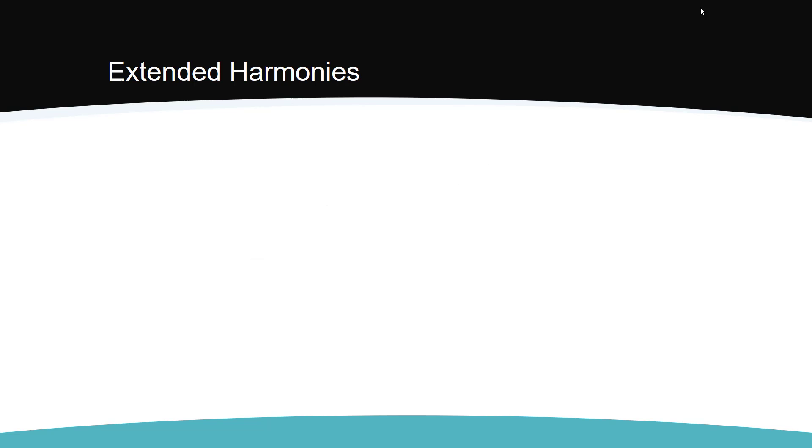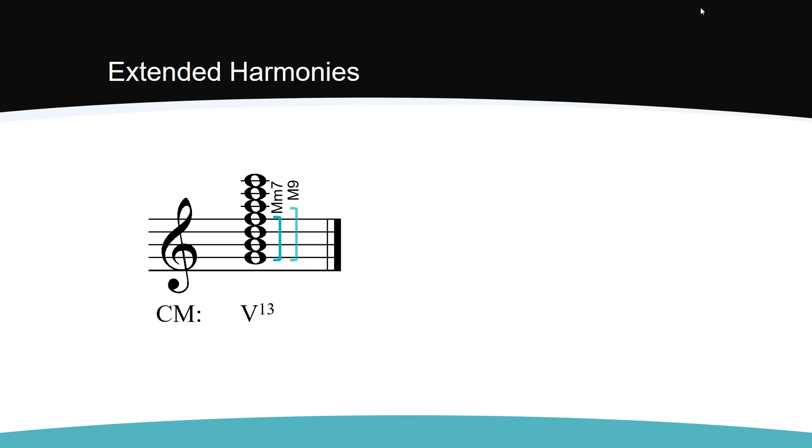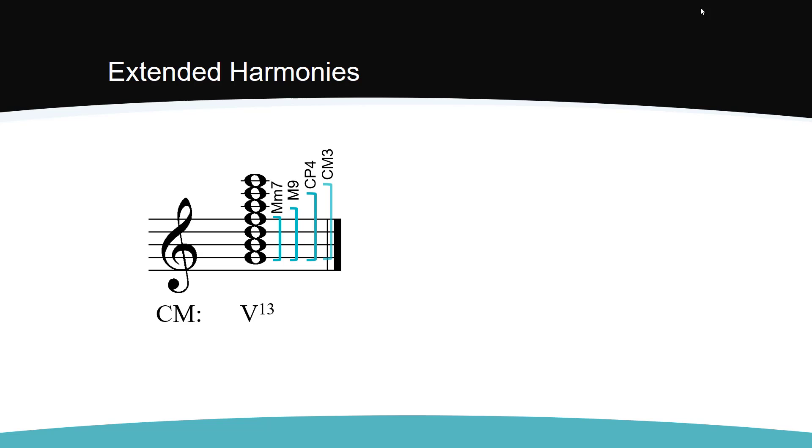Finally, we can create a 13th chord using the same process. In major, the 13th above the root creates a compound major 3rd, and in minor, it creates a compound minor 3rd. The Roman numeral in both modes is major V with a superscript 13.